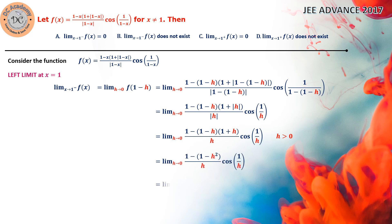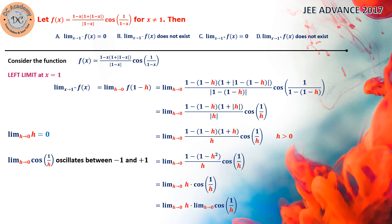We can notice the multiplier simplifies as (1 minus h)(1 plus h) which equals 1 minus h squared. So the limit becomes limit h tends to 0 of h·cos(1/h). Now if h tends to 0, h will definitely equal 0. But what about limit h tends to 0 of cos(1/h)? This actually oscillates between minus 1 to plus 1 — that is a very standard concept. Because cos(x) is a function whose value lies between minus 1 to 1.